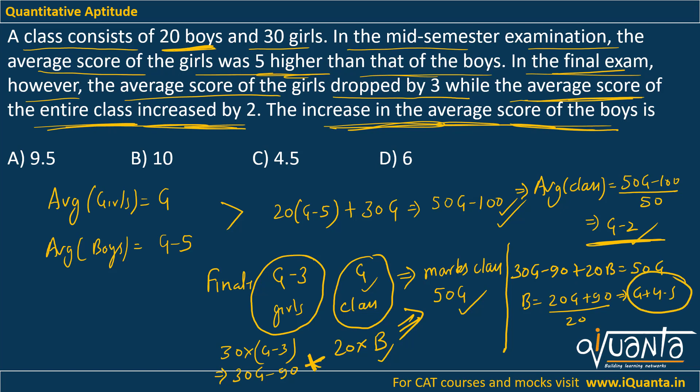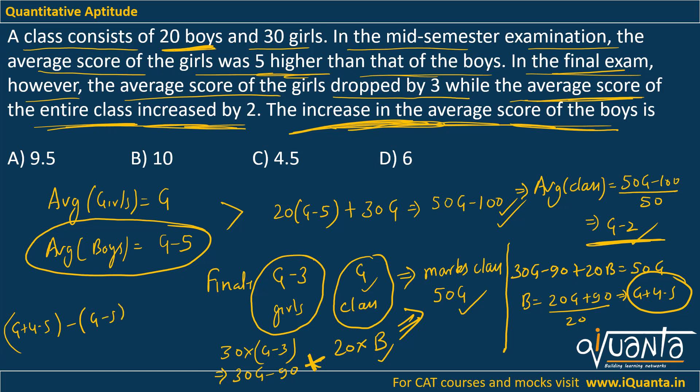The new average marks of boys is g+4.5. Earlier the average marks of boys was g-5. So the increase is final minus initial: (g+4.5) - (g-5) = 9.5 as the final answer. So option A will be the correct answer. What you have to do is always combine boys and girls — sum up their marks, and the sum of their marks should be equal to the sum of marks of the whole class. If you still have a doubt, please comment.